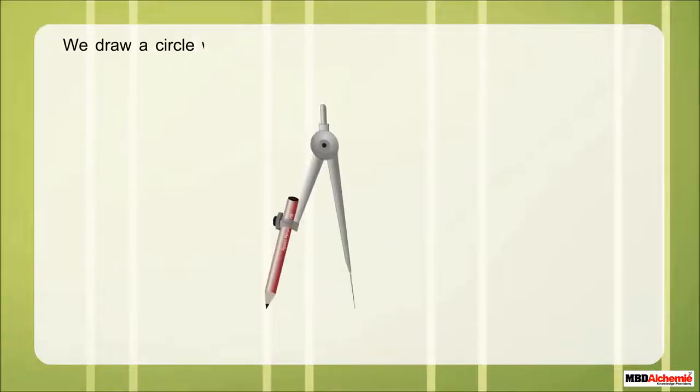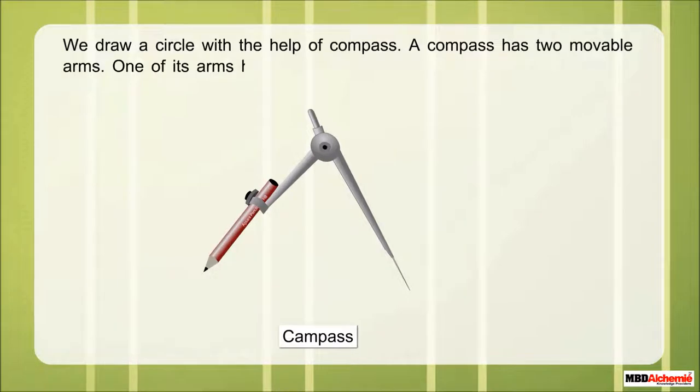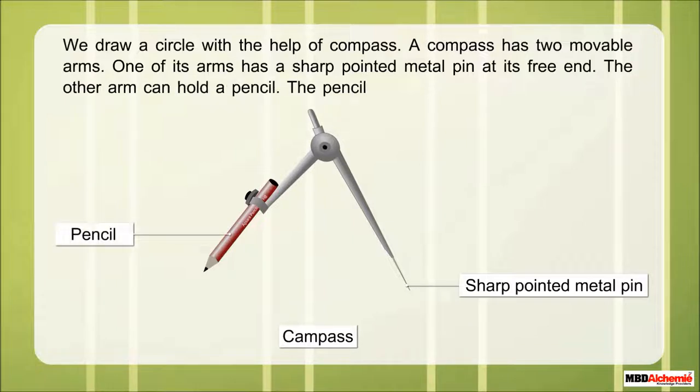We draw a circle with the help of a compass. A compass has two movable arms. One of its arms has a sharp pointed metal pin at its free end. The other arm can hold a pencil. The pencil can be fixed firmly by means of a screw.